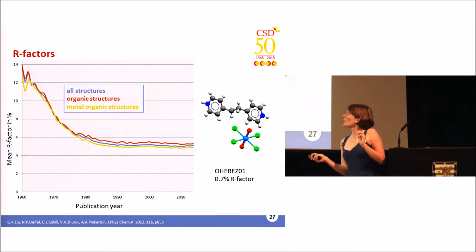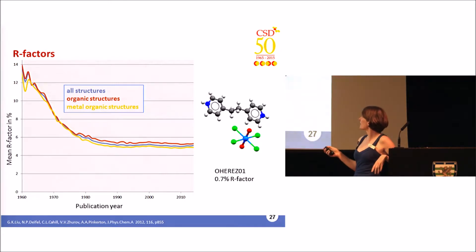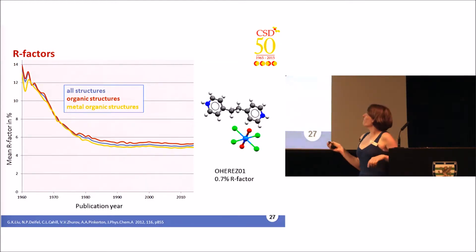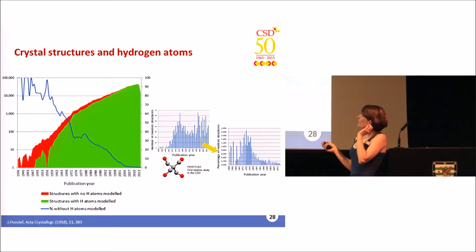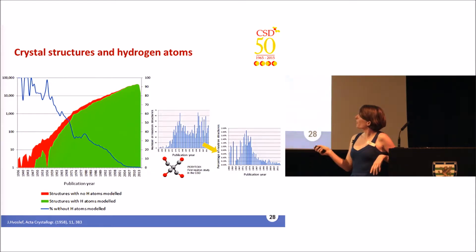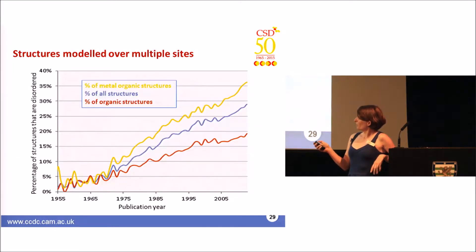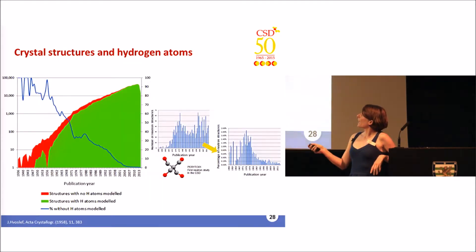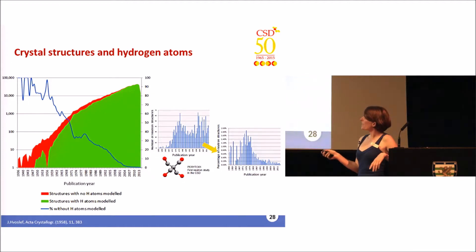As technology and software have changed, the reliability of structures has improved. The average R factor is now pretty constant at roughly 5%, and here's one of the lower R factor structures in the CSD. As software and technology have evolved, the number of structures with hydrogen atoms located has also changed. The graph shows structures with and without hydrogen atoms modeled — today we get fewer than one structure in 200 that has any unlocated hydrogen atoms.